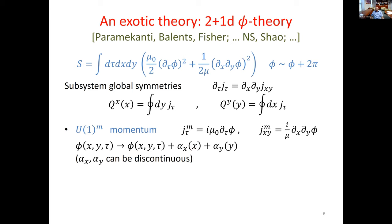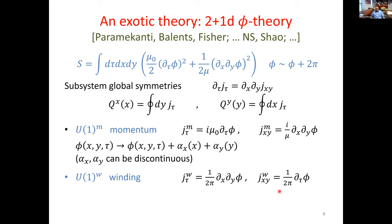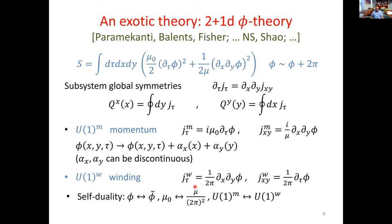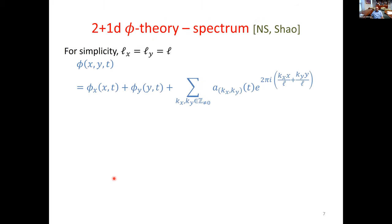Experience with the c=1 system tells us to look for a winding symmetry too, and indeed there is one — a conserved current obtained by swapping the two currents, conserved because derivatives commute. So this system has both momentum and winding symmetries, very much like the c=1 system, except these are subsystem symmetries. The similarity between winding and momentum suggests a self-duality, and indeed this model is invariant under a duality that exchanges mu and mu-zero — inverting the couplings — and exchanges the momentum and winding symmetries.